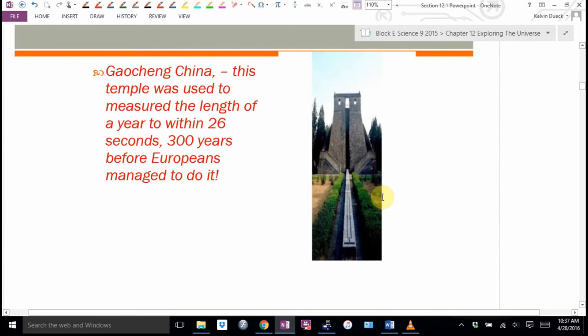Some pictures for you. So this is from China. This temple was used to measure the length of a year. It was accurate to within 26 seconds. And they made it even 300 years before Europeans managed to do it. It used shadows and things to measure the length of a year.